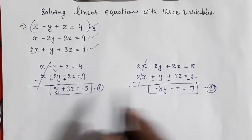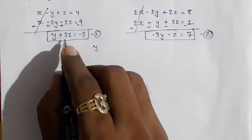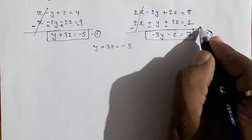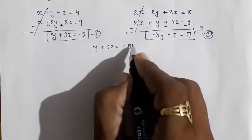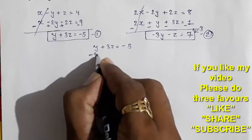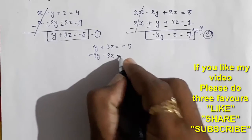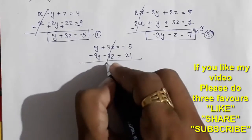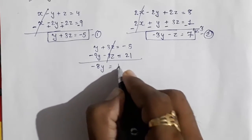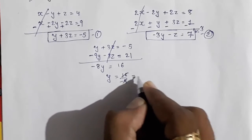Now we have two equations: y plus 3z equals minus 5, and minus 3y minus z equals 7. To eliminate z, I multiply the first equation by 3, giving 3y plus 9z equals minus 15. Adding to the second equation, minus 3y minus z equals 7, the y terms cancel and we get minus 8y equals 16, so y equals minus 2.